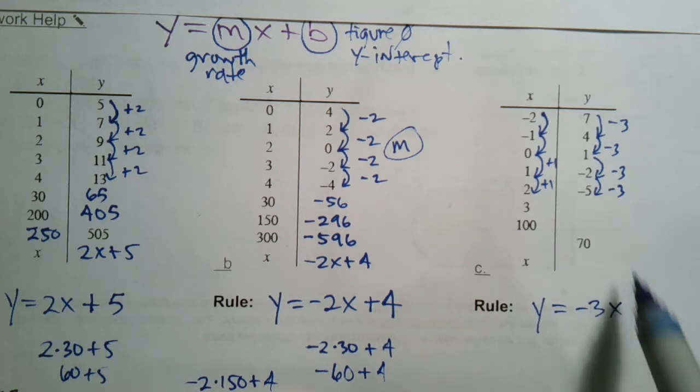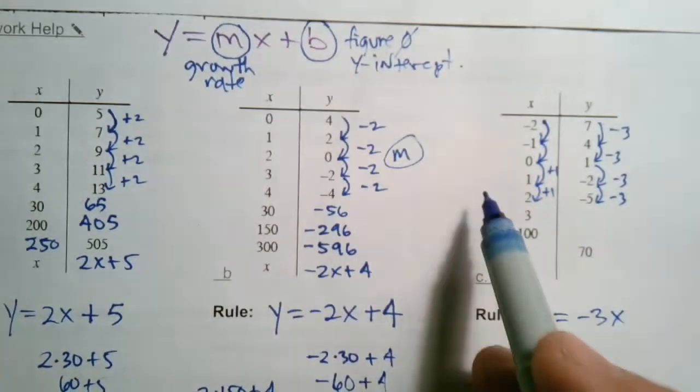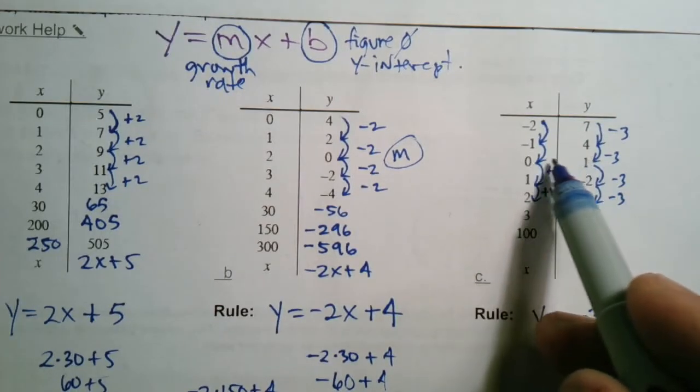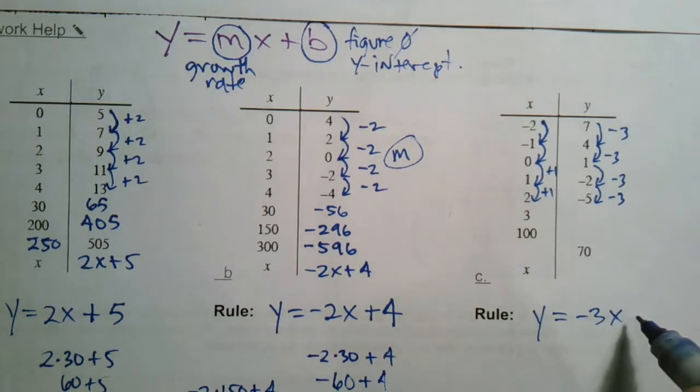Yep. So that tells me that my rule is y is equal to negative 3x. And then I've got to figure out what is my initial. What is my figure 0? So now 0 is down here, which is okay. So there's my 0. And what do I get for y? I get 1. So it's going to be negative 3x plus 1. So there's my rule.